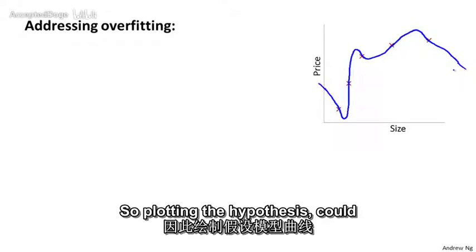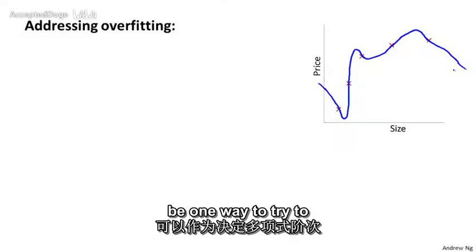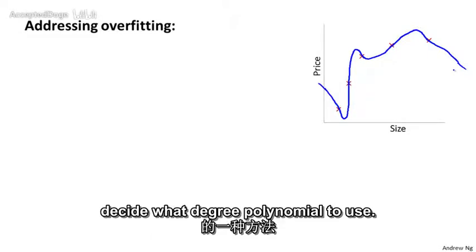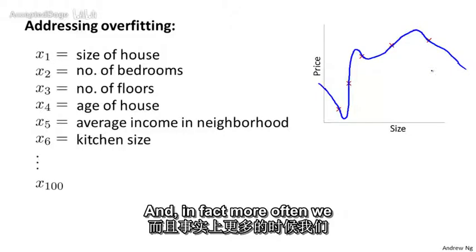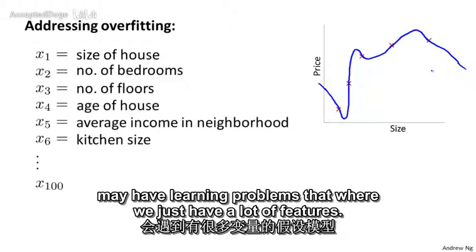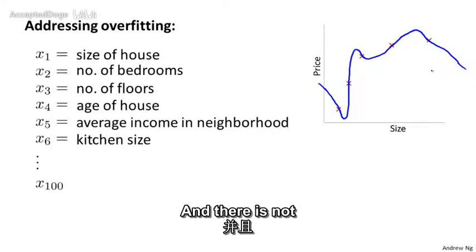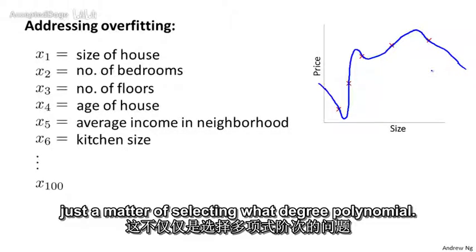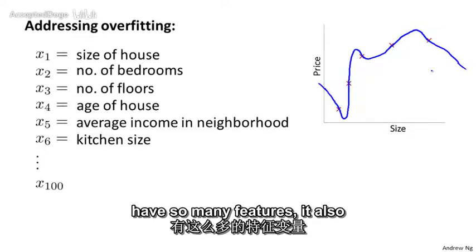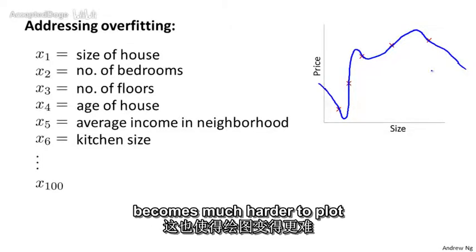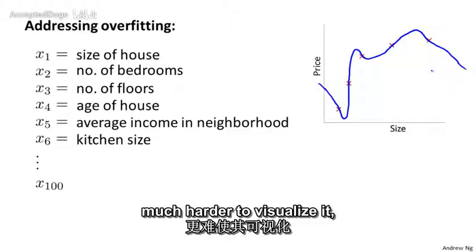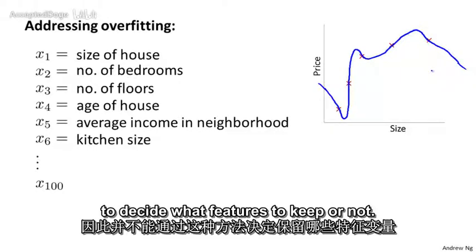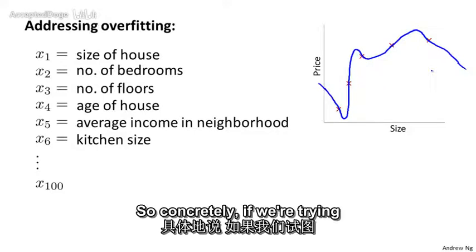And we could then use figures like these to select an appropriate degree polynomial. So plotting the hypothesis could be one way to try to decide what degree polynomial to use, but that doesn't always work. And in fact, more often, we may have learning problems where we just have a lot of features. And it's not just a matter of selecting what degree polynomial. When we have so many features, it also becomes much harder to plot the data and becomes much harder to visualize it, to decide what features to keep or not.